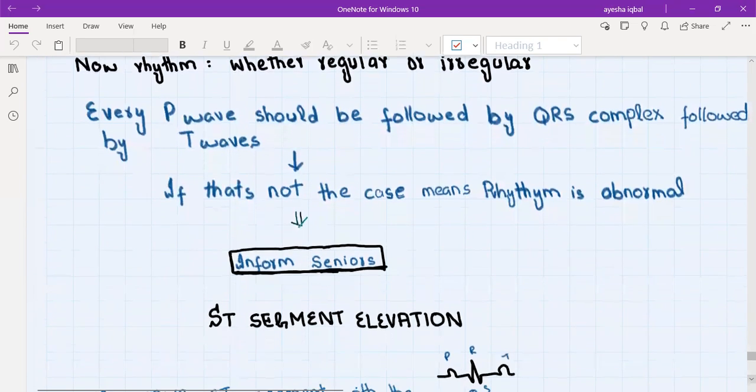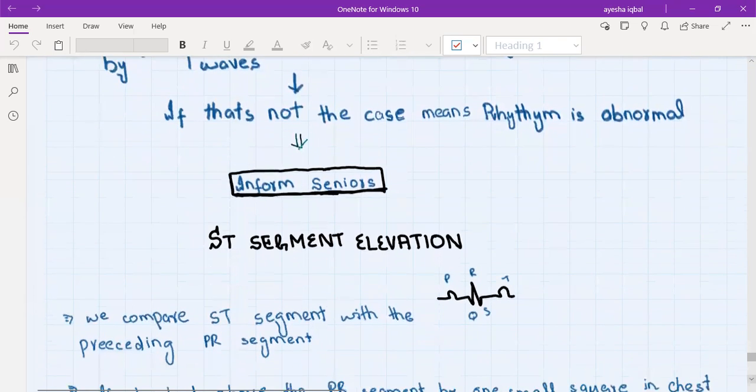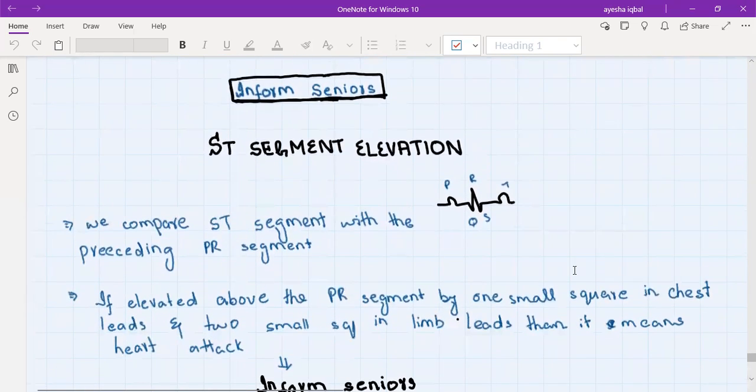Then ST segment elevation. I tell the student that this ST segment is an important thing in the ECG. We compare this ST segment with this preceding PR interval, and they should be on the same line in the ECG. But if this ST segment is elevated above the PR line, then it can indicate that the heart is receiving less blood supply. So it can mean that the patient is having ischemia of his heart. We compare this ST segment with the PR interval or the PR segment.